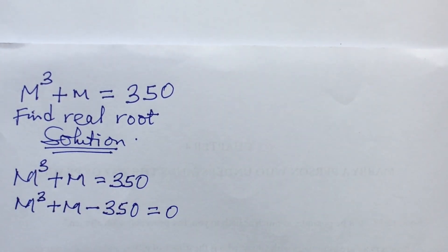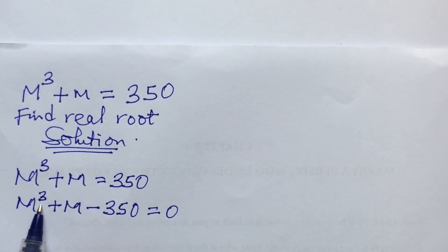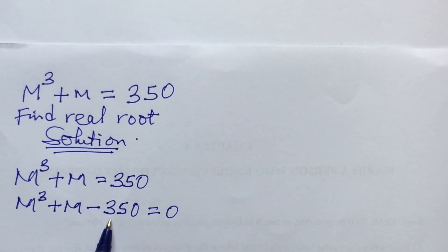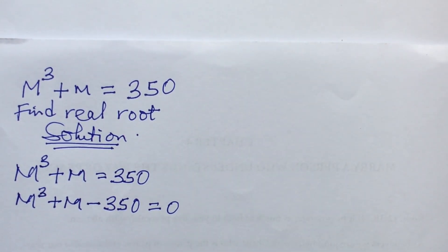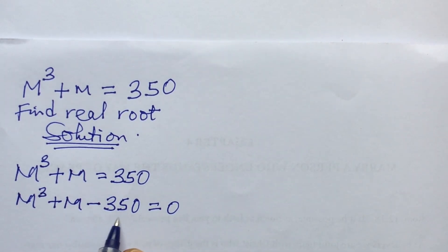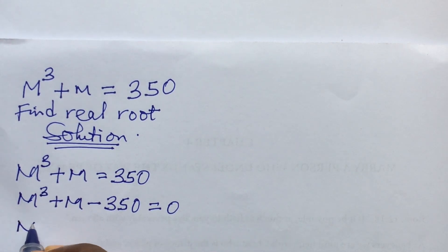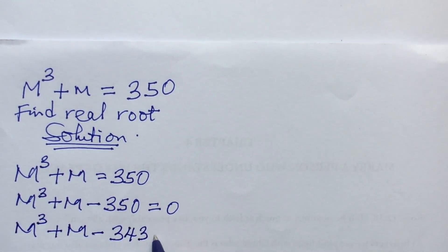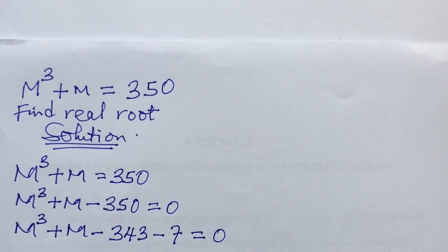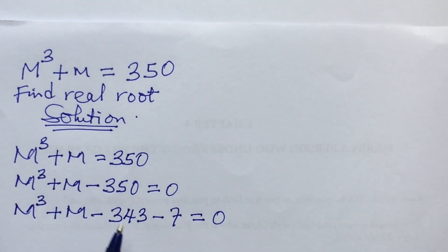Now here is how we solve this kind of polynomial equation. We have m to the power of 3, so we look for a number raised to the power of 3 such that subtracting that result from 350 gives us that same number. If we try 7: 7 to the power of 3 gives us 343, and 350 minus 343 equals 7. So we rewrite the equation as m³ + m - 343 - 7 = 0.